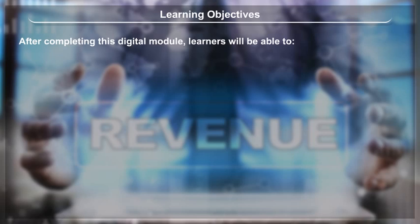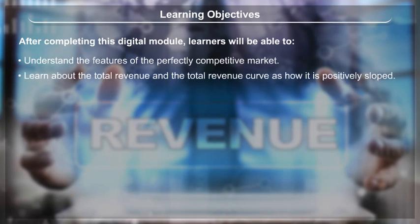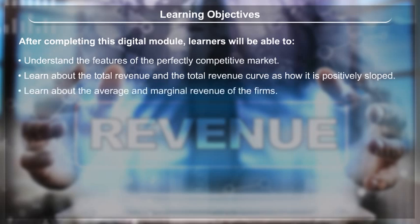Learning Objectives. After completing this digital module, learners will be able to understand the features of the perfectly competitive market, learn about the total revenue and the total revenue curve as how it is positively sloped, and learn about the average and marginal revenue of the firms.